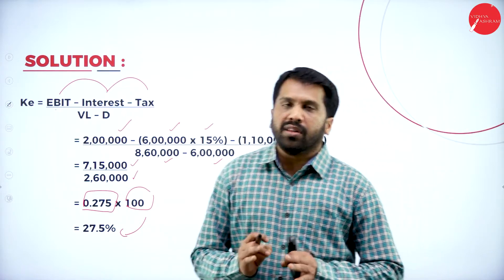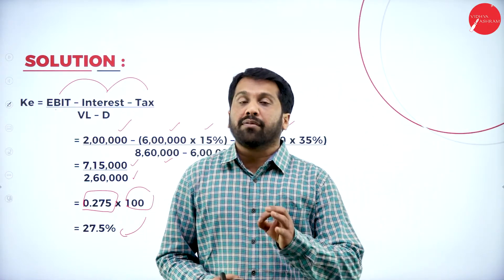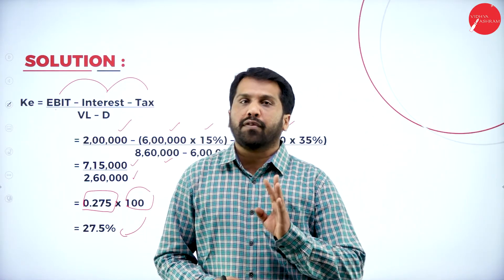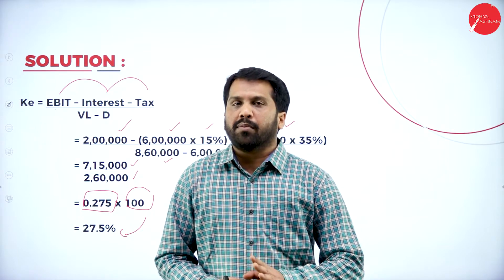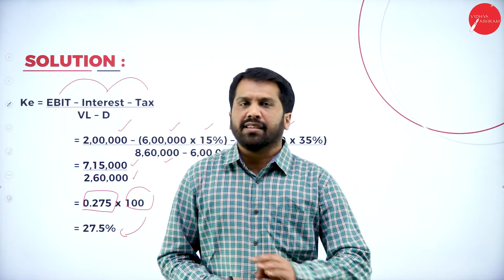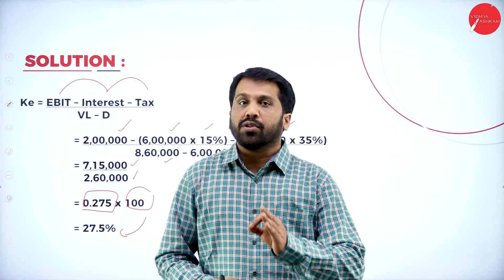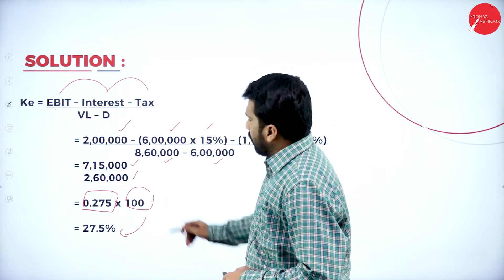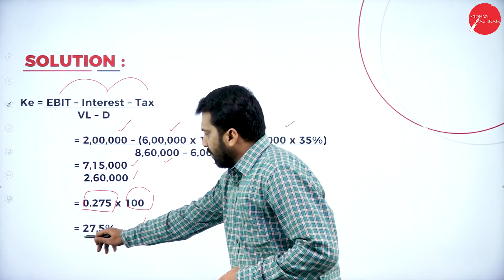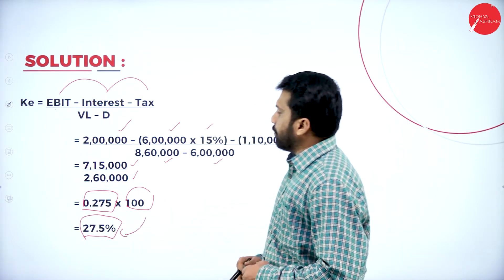The only thing you need to do is remember the formula. If you remember the formula, everything is easy — but you should also work out the problems at home once. We are done with 27.5% as the cost of equity.